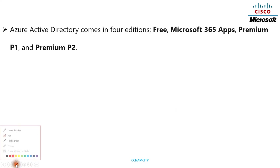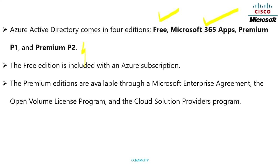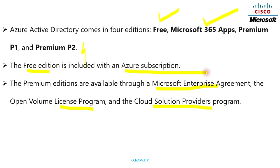Azure Active Directory has four editions basically. One is Free, the second one is Microsoft 365 Apps, the next one is Premium 1, and the fourth one is Premium 2. Every edition has a specific role and features. The Free edition is included with an Azure subscription. The Premium editions are available through the Microsoft Enterprise Agreement, the Open Volume License Program, or the Cloud Solution Provider program.